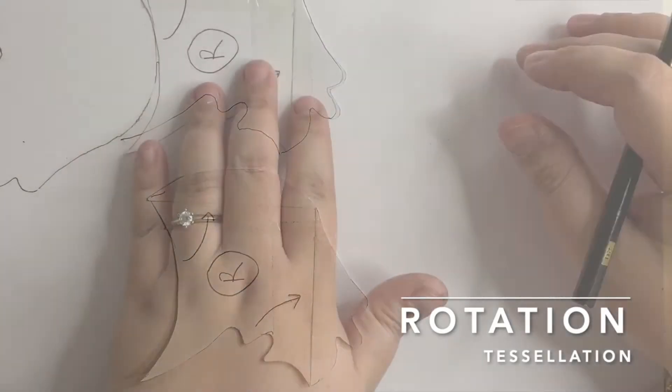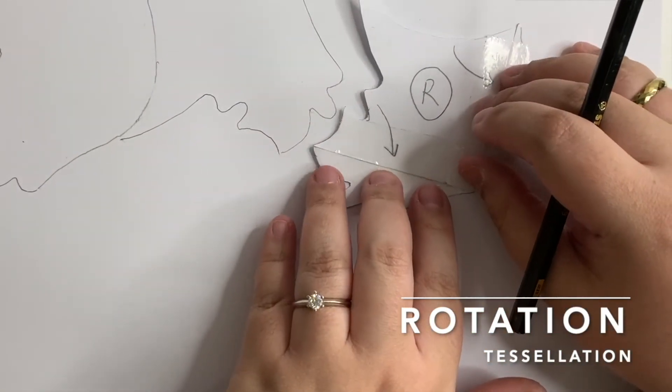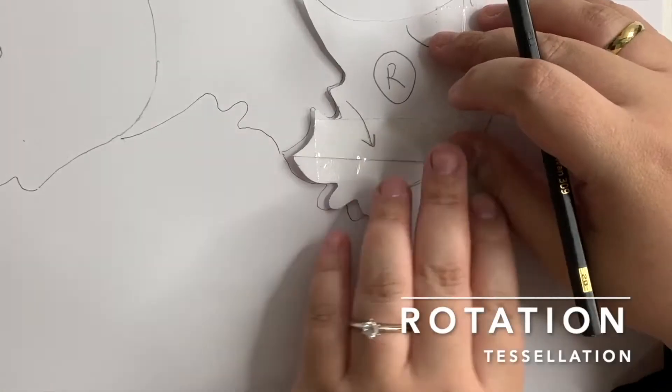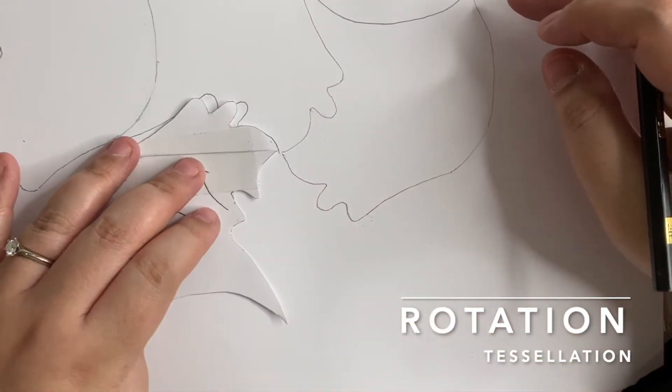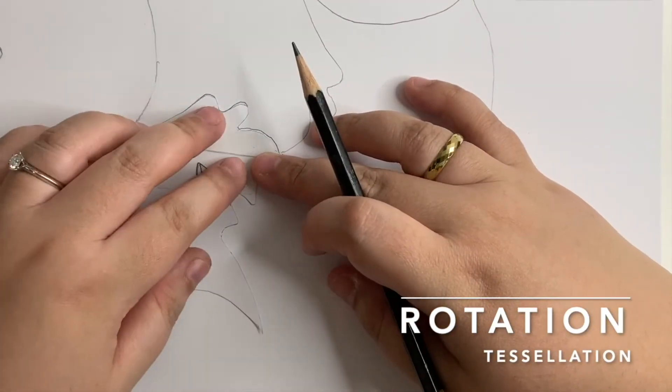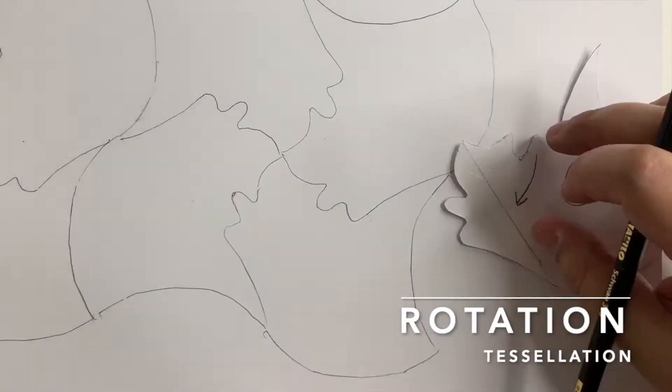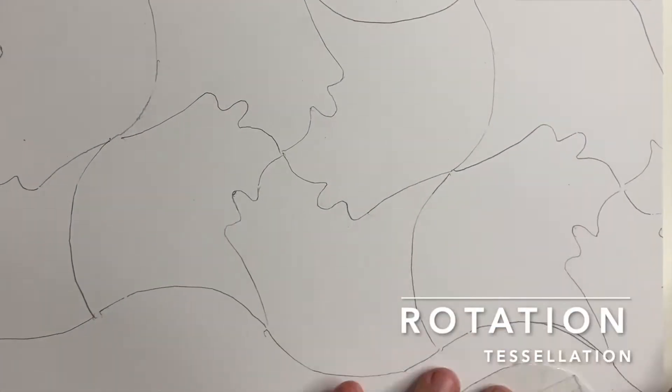Once you are done, slide the template, rotate, fit, trace. Repeat the same steps to the bottom one. Slide, rotate, fit, trace. Repeat these steps until your whole paper is filled up without any gaps or spaces in between the shapes.